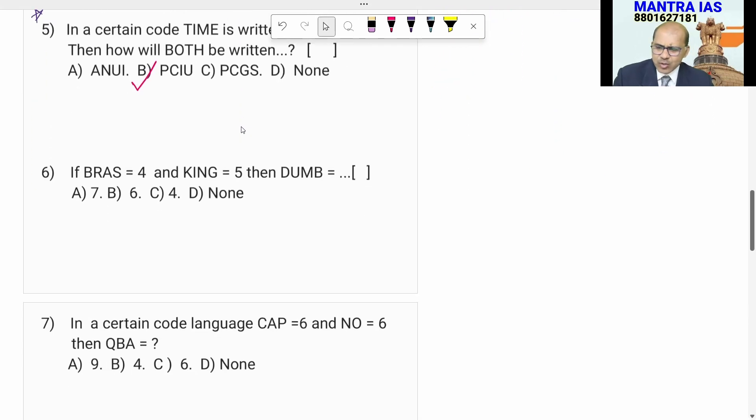Very important question number 5. TIME is written as JUPN. In same fashion, how can you code for BOTH? Very important question. If you just go on doing that, it takes lot of time. I don't want to waste your time. Simply I can tell the model directly. What is taken here? The nearest letters. T is there, U is here. I, J. M, N. E, F. So, what's the style he has taken? T, U. I, J.